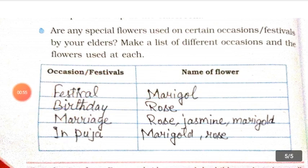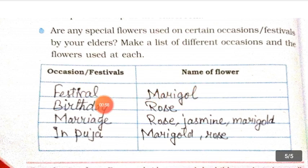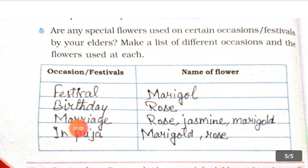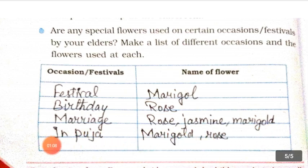If there is any festival, then we use the flower of Marigold. If there is a birthday, then we use the flower of rose. If there is a marriage, then we use the flowers of rose, jasmine, marigold, etc. In Puja, we use the flowers of marigold and rose.